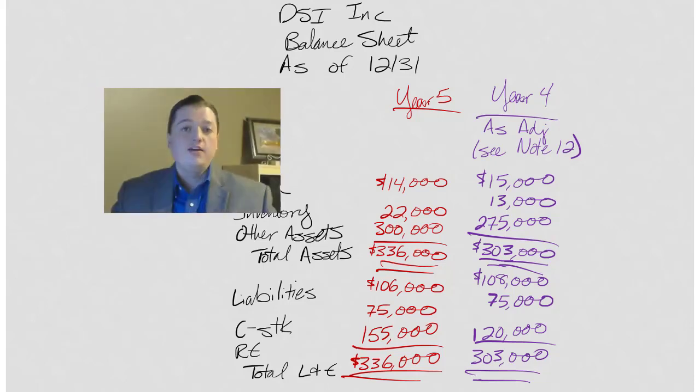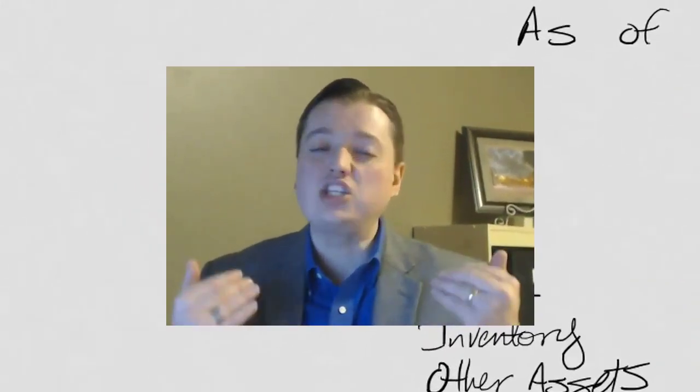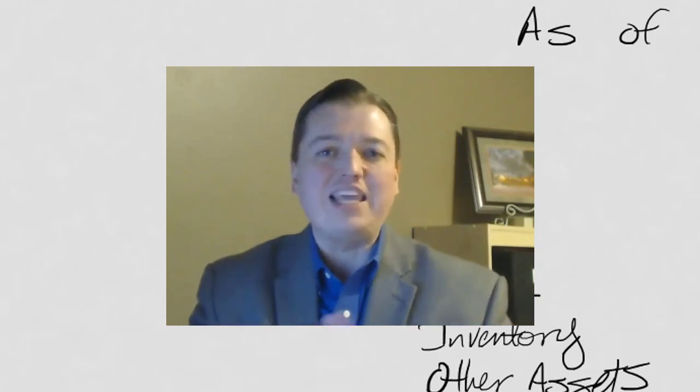Now that wraps up step number three for doing our change in principle. We started with numbers I gave you, but if you were doing this yourself, you'd have to calculate all the balance sheet and income statement account balances under the new method. Step two, we took a look at new retained earnings, got new net income values and new retained earnings values. Then we built the statements. You'll notice we changed both this year's numbers and we went back and restated last year's numbers. The only step left now is step number four, the journal entry. We're going to do that in our next segment. I'll see you then. Thanks.